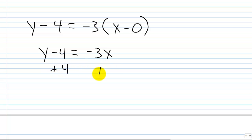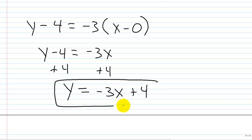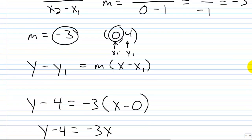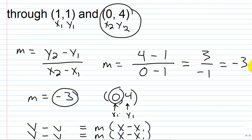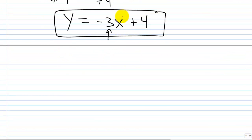We add 4 to both sides to get y equals negative 3x plus 4. Quick check: the slope is negative 3. Plugging in the original points — 1 comma 1 and 0 comma 4 — if you plug in 1, you get negative 3 times 1 plus 4, which equals 1. That checks out. Plug in 0, and y equals 4. That checks out as well.